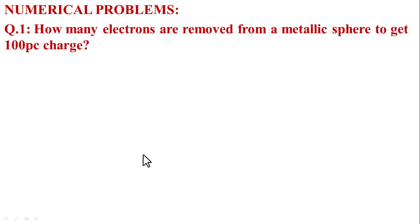Numerical Problems, Question No. 1. Given statement: how many electrons are removed from a metallic surface to get a 100 picocoulomb charge? Here, the given value is charge Q equal to 100 picocoulombs. We need to find the number of electrons N.